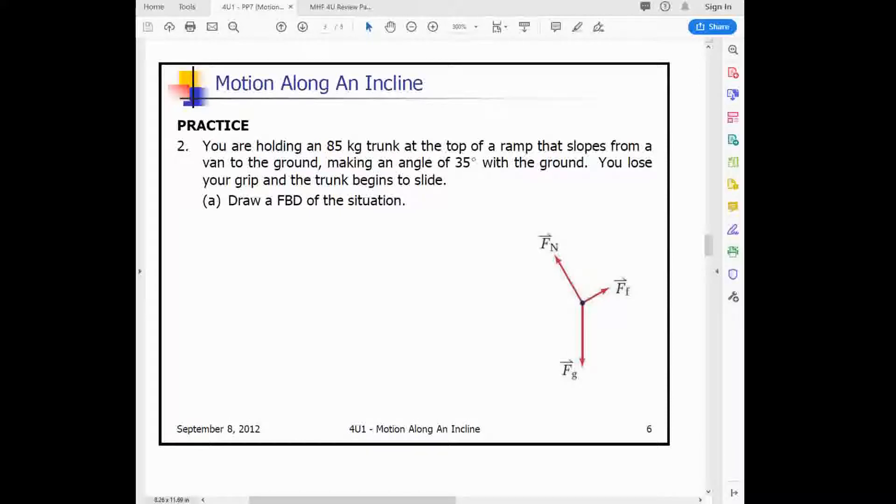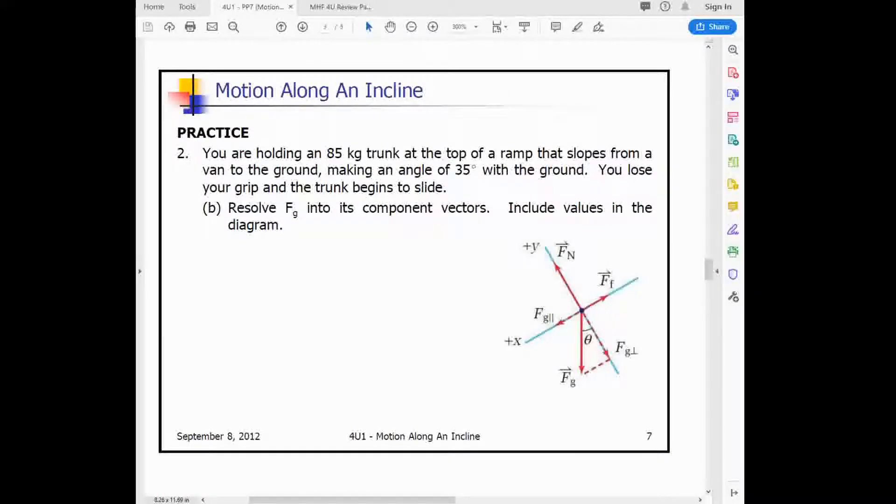So here's a problem. It says you're holding an 85 kilogram trunk at the top of a ramp that slopes from a van to the ground. So it's on this ramp, and the angle with the ground is 35 degrees. You lose grip, and the trunk begins to slide. So a free body diagram of this situation would look something like this. Our FG is operating directly down. We're going to treat our FN, which will be at that angle, to be in our Y direction, and our FF will be on the incline. We're going to treat that as the X direction. And when we draw in everything here with our XY axis, we can see that the FG, that angle that we have, that 35 degree slope that we had, will be equal to that 35 degree offset that FG is from the Y direction.